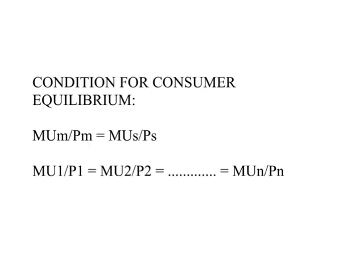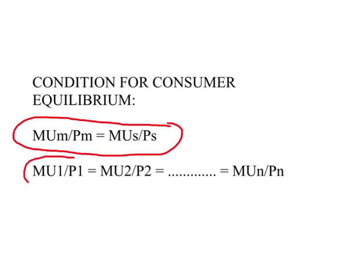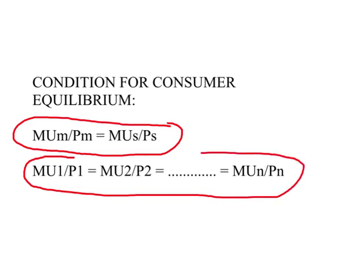This is the last lecture on consumer theory using cardinal utility. In the previous video I had defined consumer equilibrium — the point where a person maximizes total utility given the budget constraint — and we also derived a principle for consumer equilibrium: the ratio of marginal utility divided by its price must be equal across all commodities.